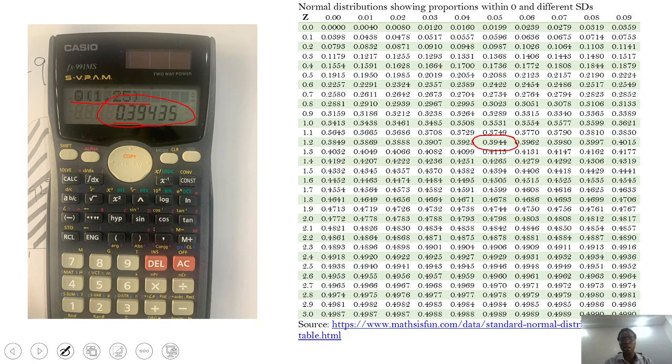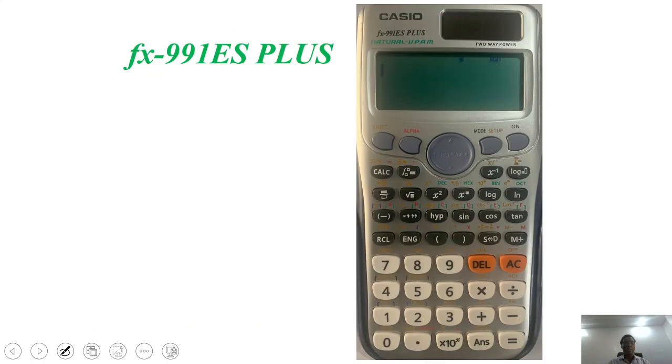If you check 1.25 here, it gives you 0.3944, and 0.39435 is approximately 0.3944. So if you use the FX-991ES PLUS, the process is very similar.